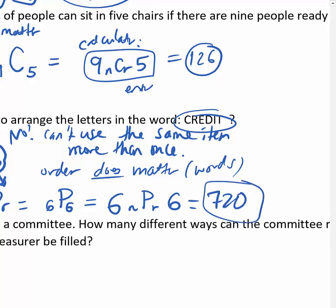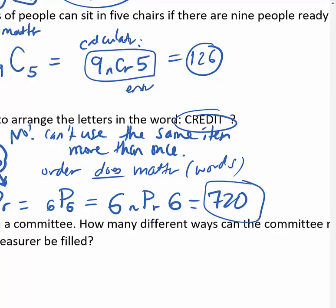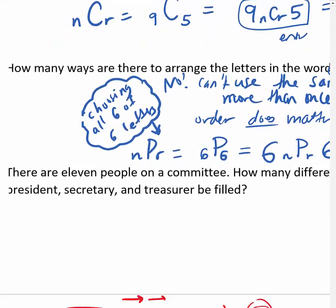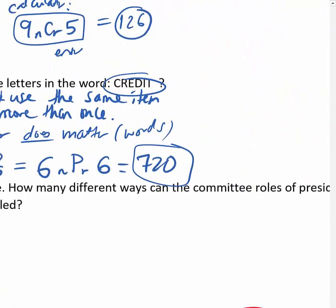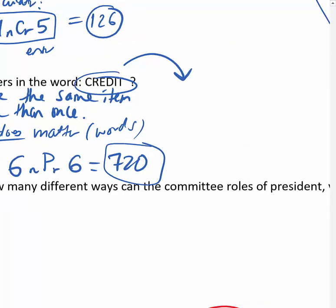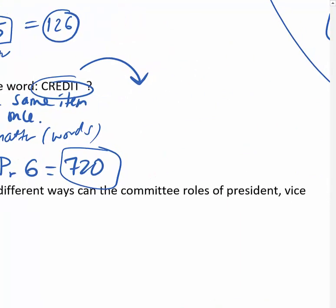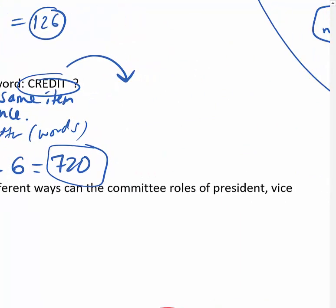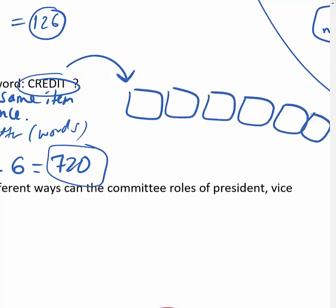On my calculator: 6, probability, NPR, 6. I get 720. You could also have done this with the counting principle: 6 choices for the first letter, 5 for the second, 4 for the third, and so on - you'd get the same answer. This works when you're choosing all of the items.